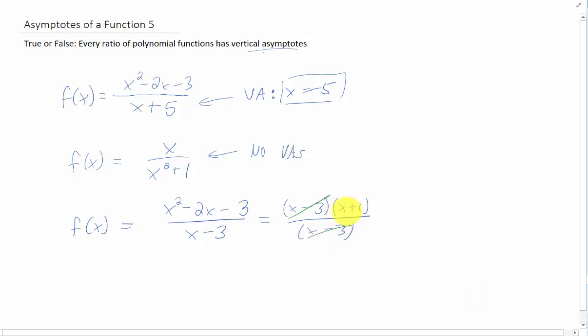Giving you just a line that looks like y equals x plus 1. The only difference being we had what we call a removable discontinuity. And that shows up as a hole in the graph at x equals 3. A hole in the graph is not an asymptote. So this is an example of a ratio of polynomial functions that also doesn't have a vertical asymptote.